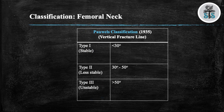Another classification you should be familiar with is the Pauwels classification. This looks at the fracture orientation and is broken up into three subtypes, giving insight on whether the fracture is likely to be stable or unstable. The more vertically oriented the fracture, the more unstable it is. Type 1 is less than 30 degrees, Type 2 is between 30 to 50 degrees, and Type 3 is greater than 50 degrees.